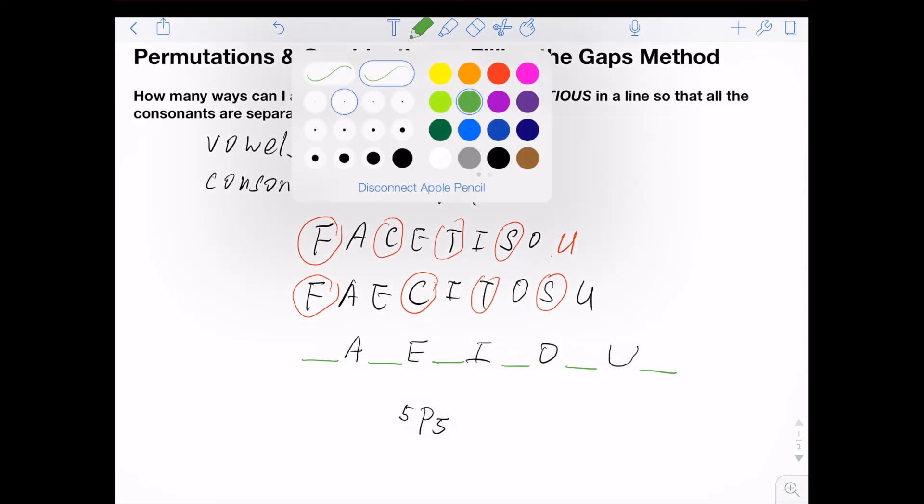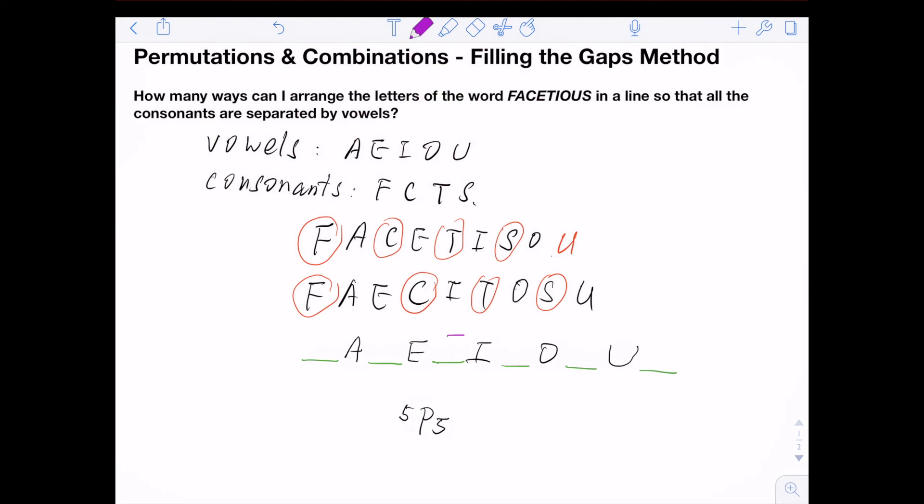For example, I can put my F here, my C there, T there, and S here, for example. That's one of the possibilities. And you can see all the consonants are separated by the vowels already, since they are in the gap.